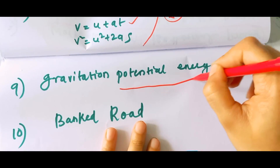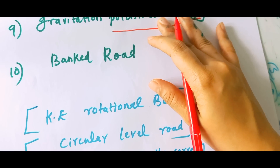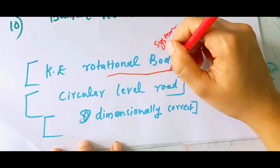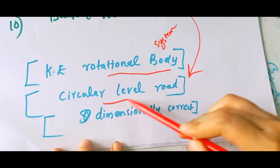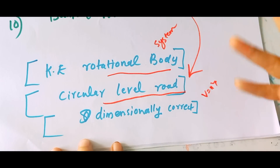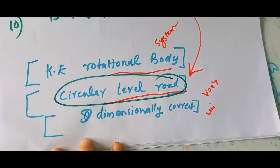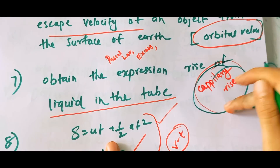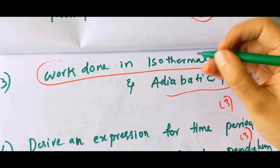Then you can see the gravitational potential energy derivation. You can see the kinetic energy of rotational motion. Derive an expression for maximum speed on a circular level road. Check whether an equation is dimensionally correct — you can see the dimension of the units. You need to see capillary rise, excess pressure inside a drop, and escape velocity — the escape velocity and adiabatic process are also available.